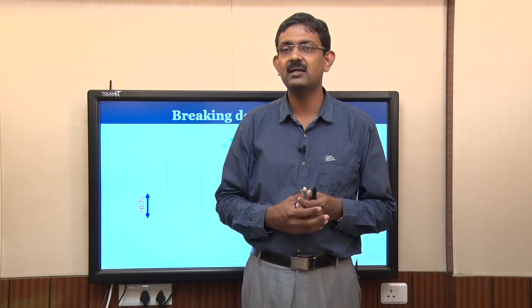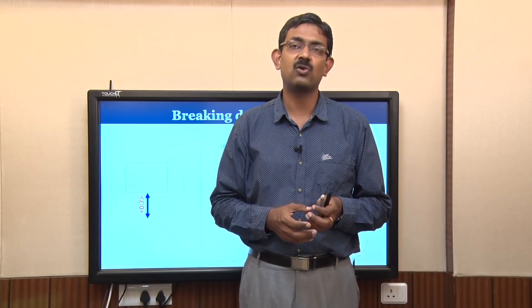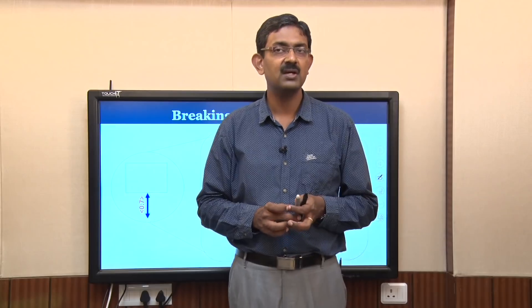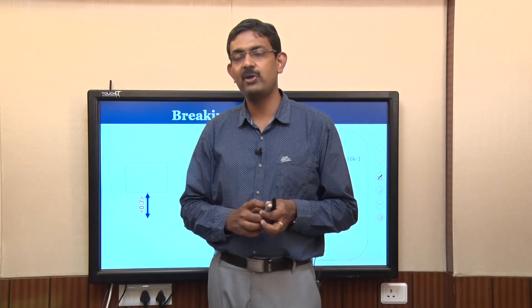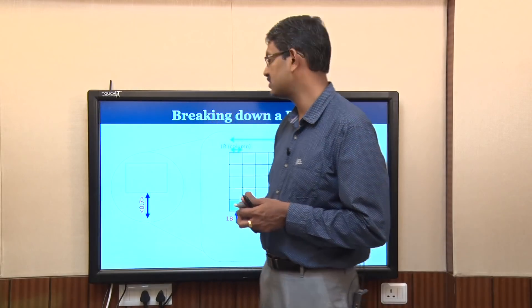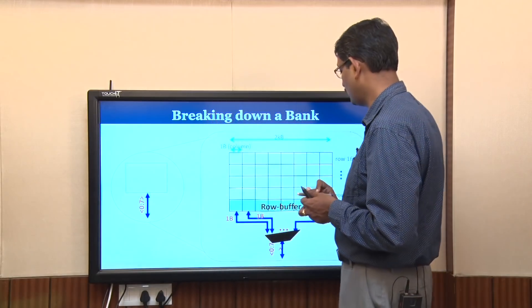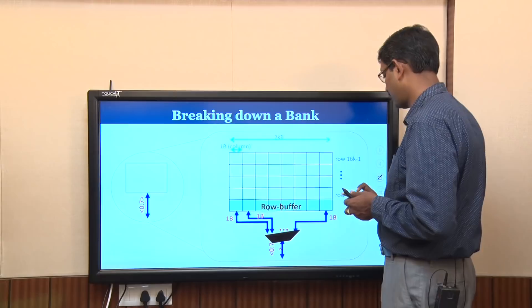Looking into each bank, we see rows and columns, and the intersection of a row and column gives one bit of information.